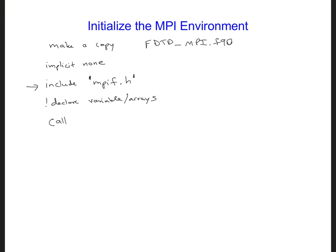And here we're going to put ierr. That is just an error flag. So if there are any problems with initializing the MPI environment, ierr will be given a value that we could then check if we wanted to.